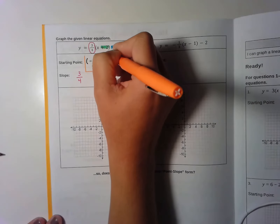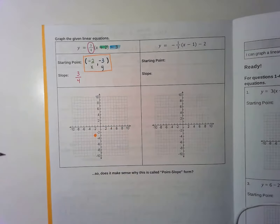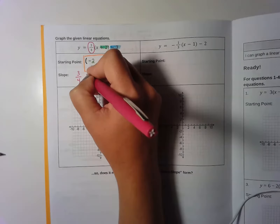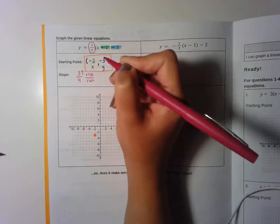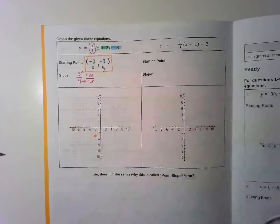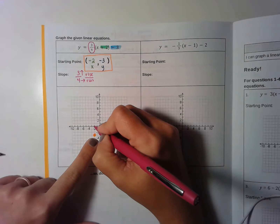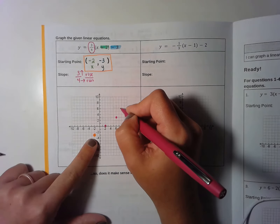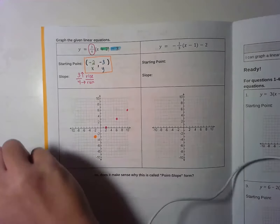Now, how can we use this to actually make a graph? We graph the starting point: negative 2, negative 3 — negative 2 for x, negative 3 for y. Then I use my slope to get more points. Slope tells me rise over run: since the top number is positive, I rise 3, and since the bottom is positive, I go right 4 spaces. Starting from the starting point, count up 1, 2, 3 spaces and then right 1, 2, 3, 4 spaces — that's your next point. Continue: up 3, right 4, up 3, right 4, until you run out of room.